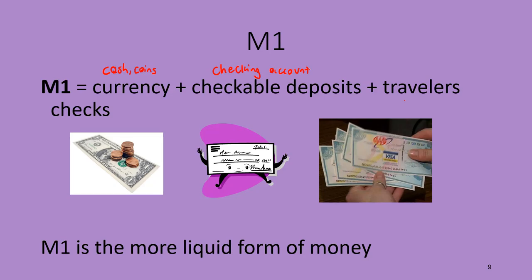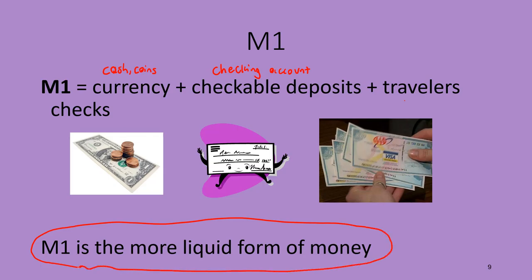Checkable deposits refers to the amount of money in your checking account, which gets included in the M1 calculation of money. Traveler's checks are checks you can use in foreign countries to trade for goods and services the same way you can write a check here in the United States. All these three things have something in common: they are very liquid forms of money — stuff you can spend right away. You can go to the store with cash and coins, swipe your debit card from your checking account, or use traveler's checks overseas, all without needing to convert or switch between accounts. That's what makes this the M1 measure of money supply.